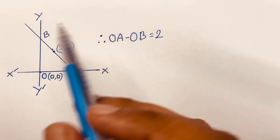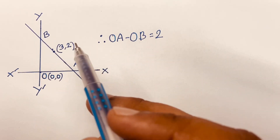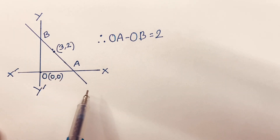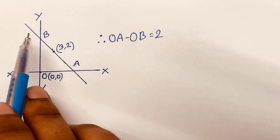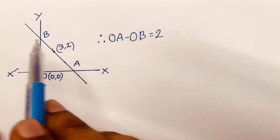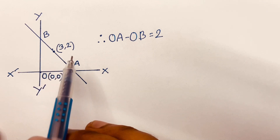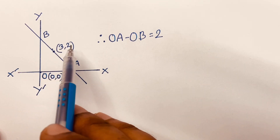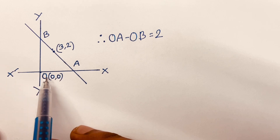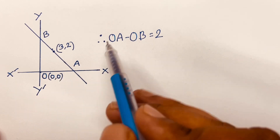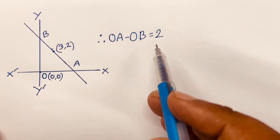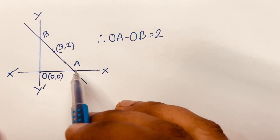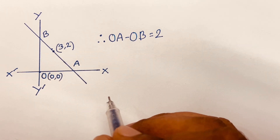Hello everyone, today I solve this question. Here is x and this is y and here is the straight line. This straight line is AV and it crosses x and y axes. Here is a point on this line which is (3, 2), and the main point is (0, 0), and OA minus OV is equal to 2. We will find out what is the equation of AV. So let us start.